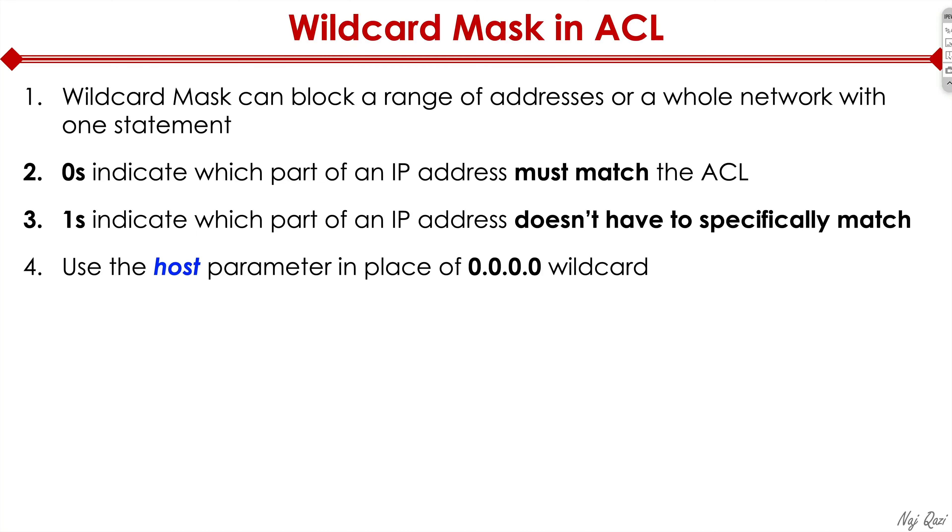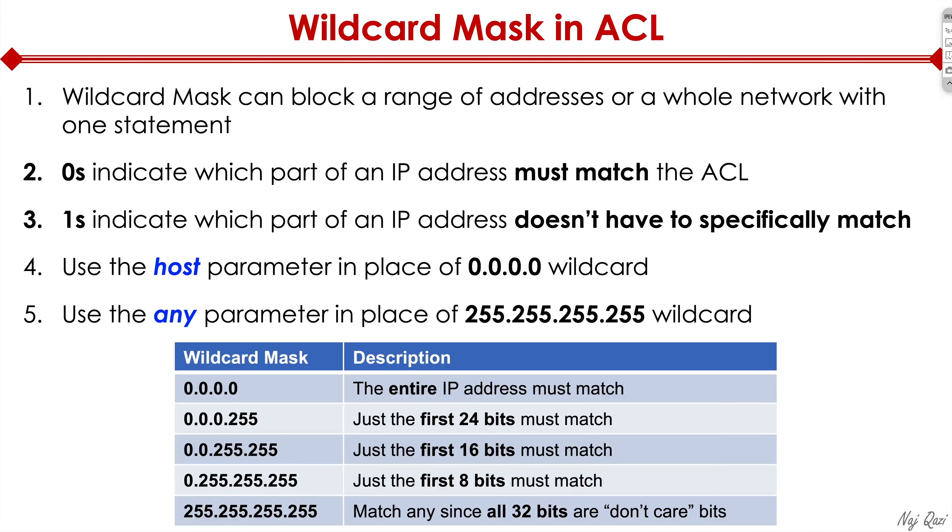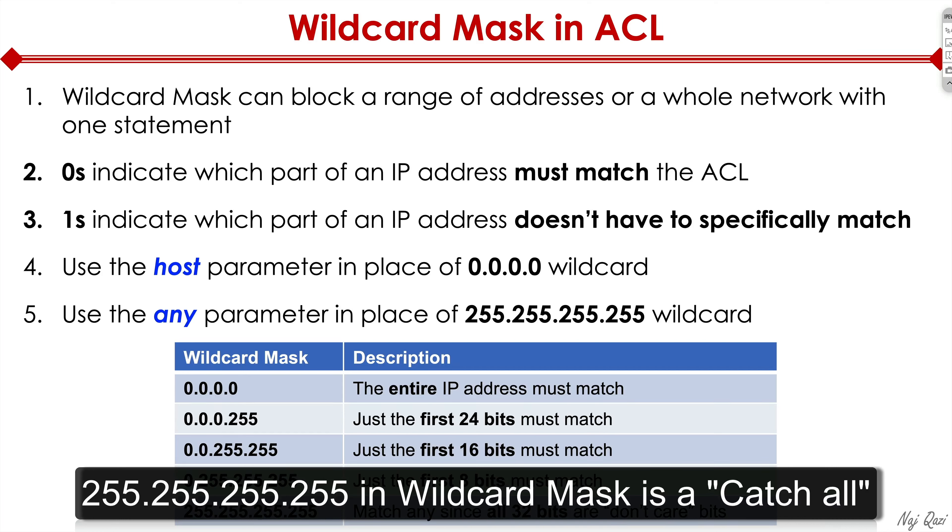Use the host parameter in place of 0.0.0.0 wildcard or use the any parameter in place of 255.255.255.255 wildcard. Here's a quick chart. If you want to match the entire IP address exactly, you're going to have to say 0.0.0.0. If you want to match anything, you'll say 255.255.255.255 at the very bottom, and that means all 32 bits can be matched because those are don't care bits.